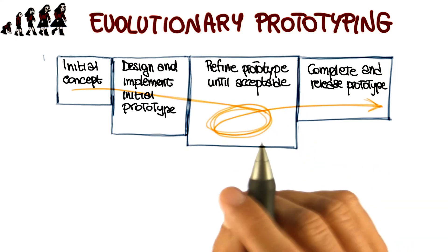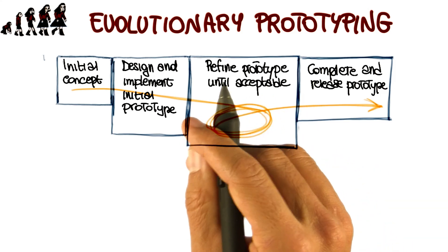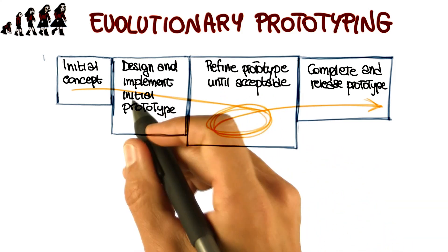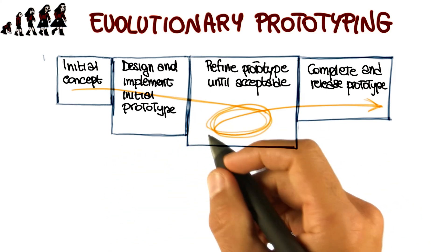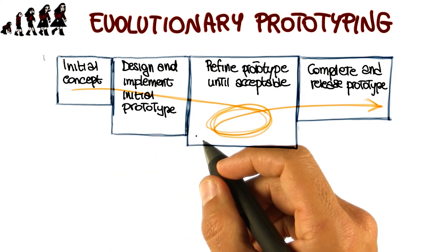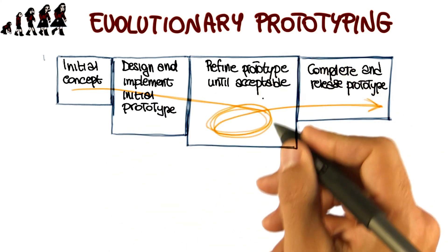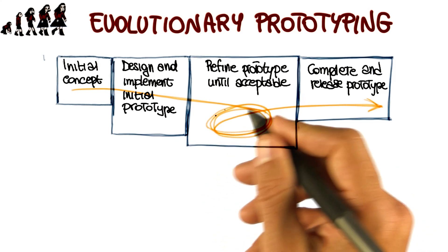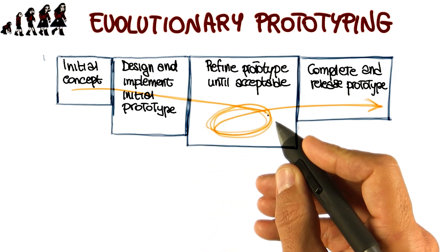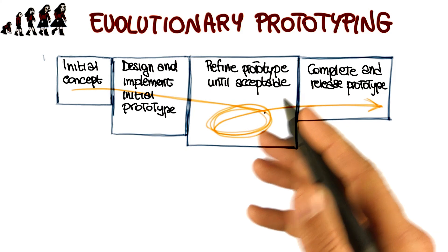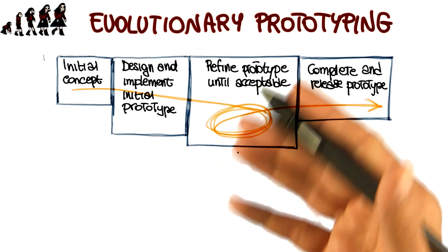Looking at this in a little more detail, developers start by developing the parts of the system that they understand, instead of working on developing a whole system including parts that might not be very clear at that stage. The partial system is then shown to the customer, and the customer feedback is used to drive the next iteration, in which either changes are made to the current features, or new features are added.